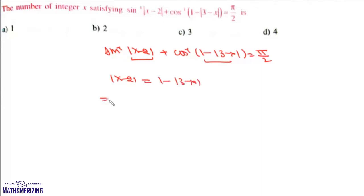We can rewrite this as |x-2| + |3-x| = 1, which can also be expressed as |x-2| + |3-x| equals |(x-2) + (3-x)|.